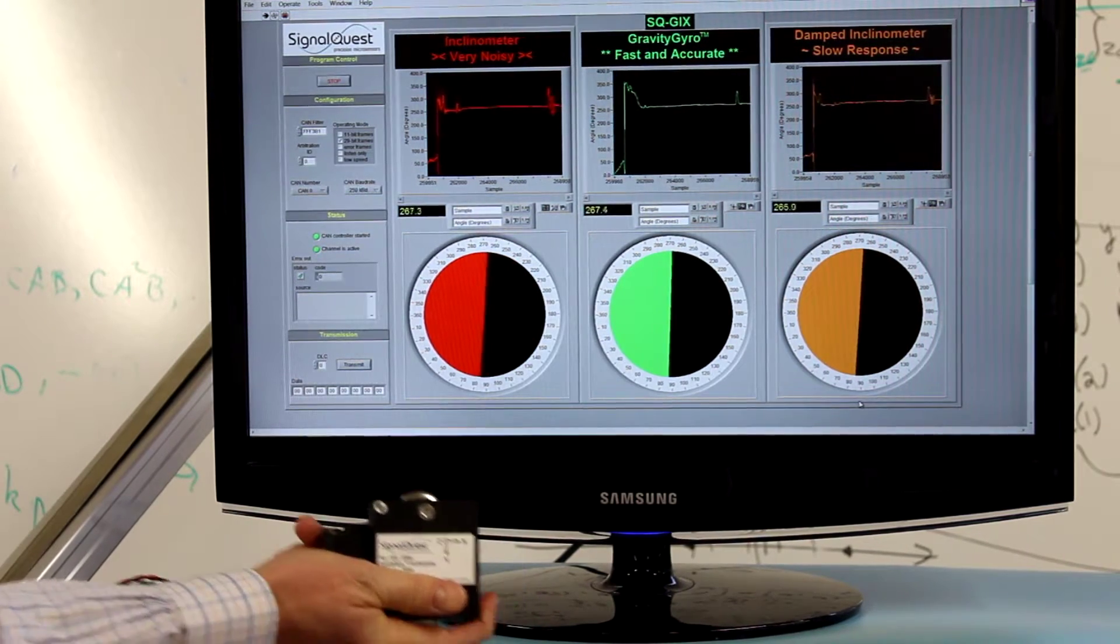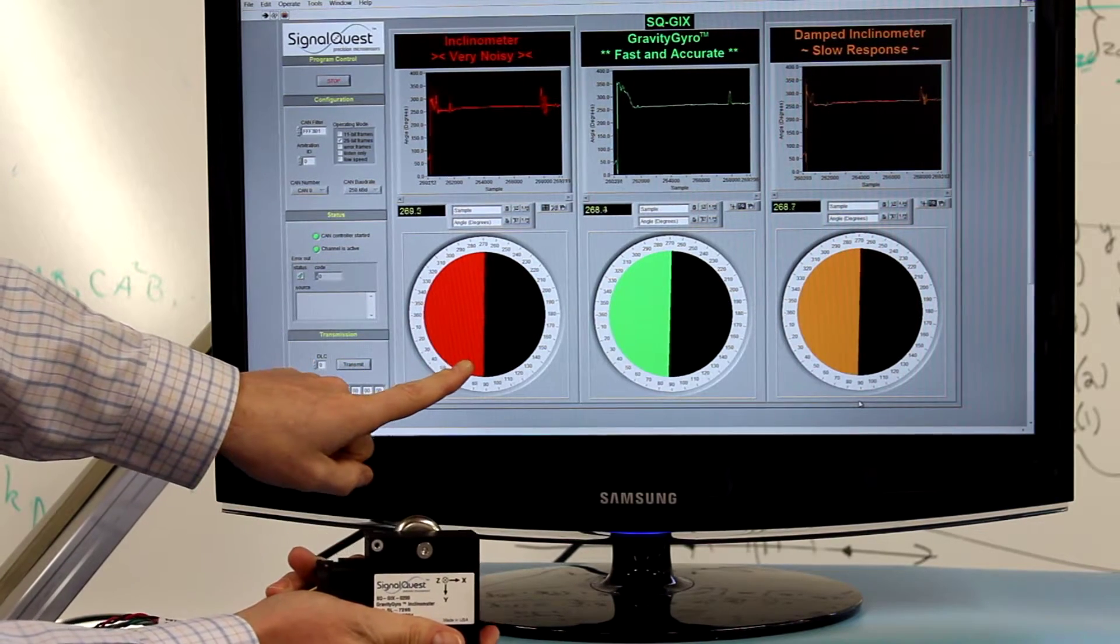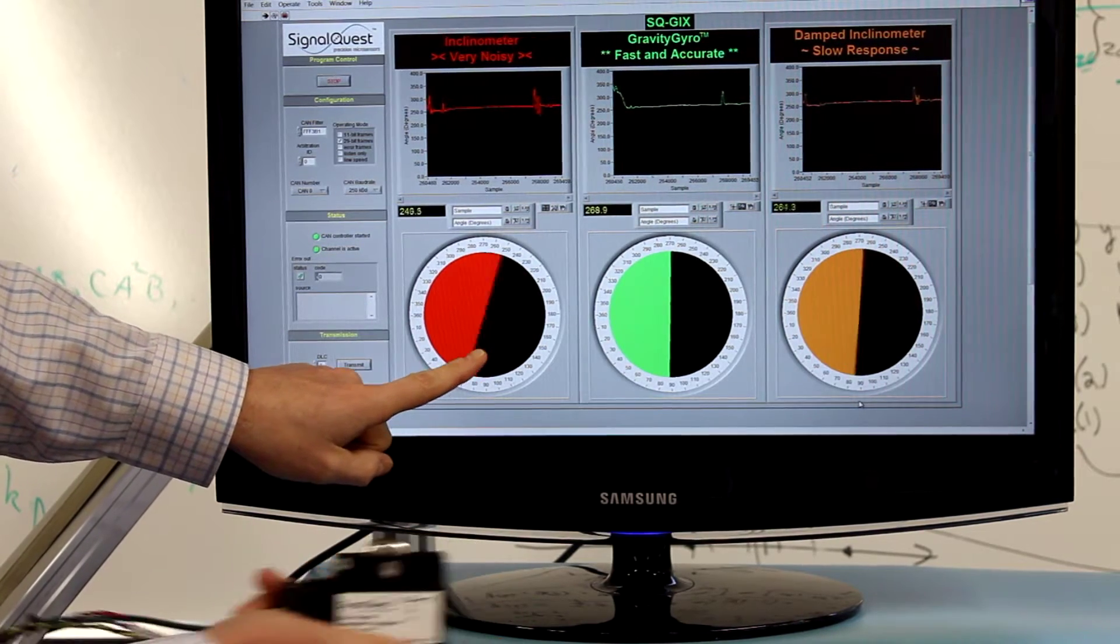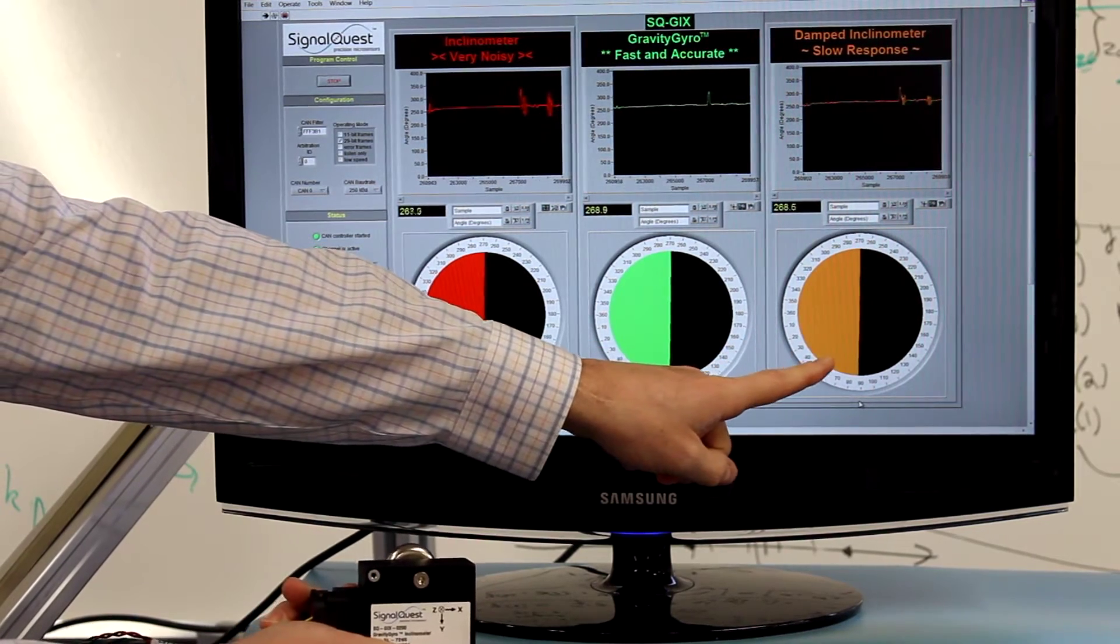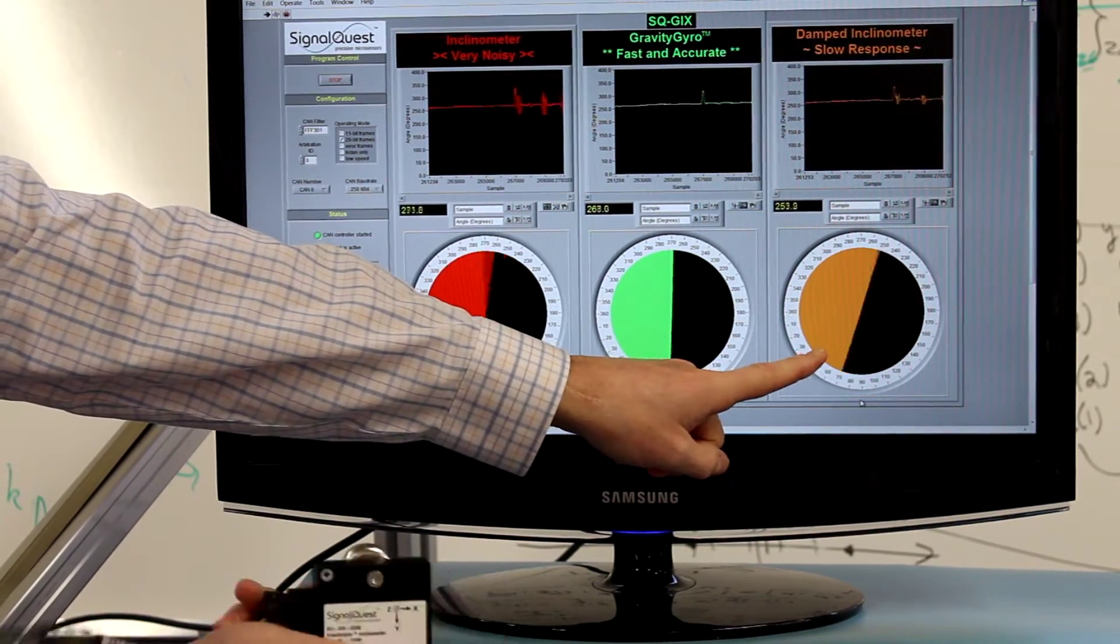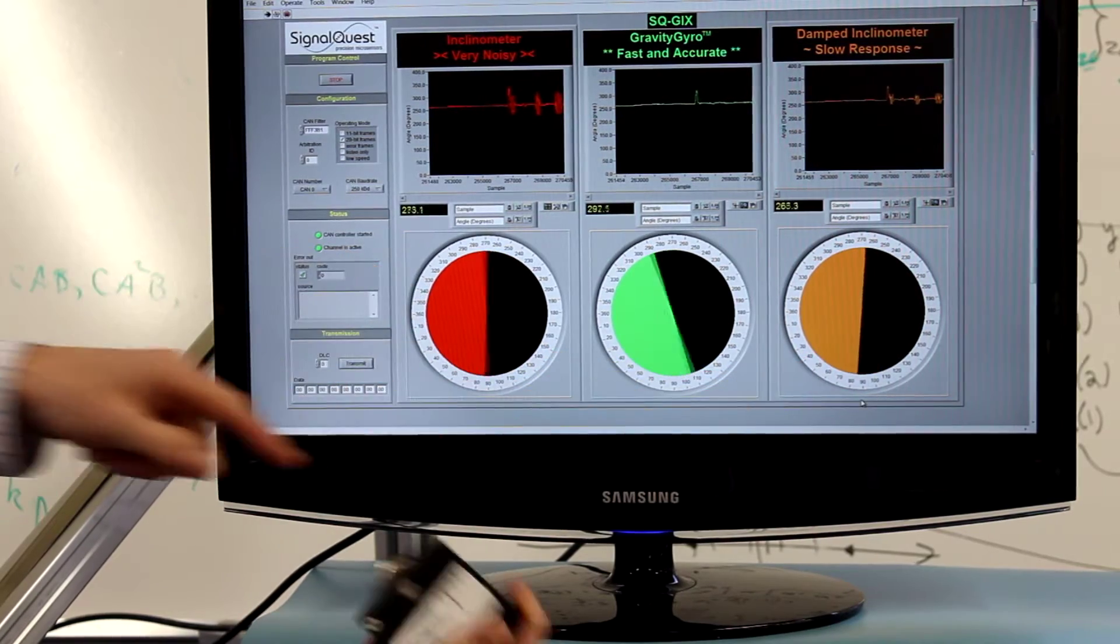We have three displays. The one on the left is a fast inclinometer, very noisy. The one on the right is a damped or filtered inclinometer, a little less noisy, but with a damped response time.